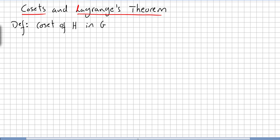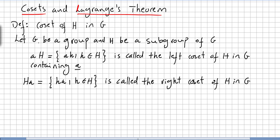Definition: coset of H in G. Let G be a group and H be a subgroup of G. The set aH, such that h is in H, is called the left coset of H in G containing a. And Ha, the set Ha such that h is in H, is called the right coset of H in G.